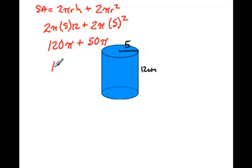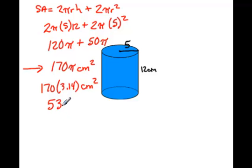Combining like terms gives me 170π square centimeters. If it asks for an exact answer, that would be our exact answer. If we need to round to the nearest tenth, we would say 170 times 3.14, which gives us 533.8 square centimeters. Rounded to the nearest whole number, the surface area is 534 square centimeters.